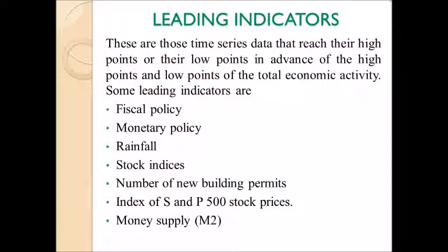Fiscal policies are the policies and measures taken by the central government in order to control the money supply or inflation in the economy. Monetary policies are those measures taken by the central bank of the country — that is the RBI — in order to control the money supply in the economy. These two policies indicate the change that is going to happen in the economy. Rainfall indicates the monsoon state in the economy. Stock indices refer to Sensex and Nifty of NSE and BSE. New building permits indicate change in the economy. S&P 500 — Standards and Poor — acts as a good forecaster of the economy. Money supply refers to certain amounts of money deposits in banks and post offices; we have M1, M2, M3, and M4, and M2 is considered the leading indicator in this approach.